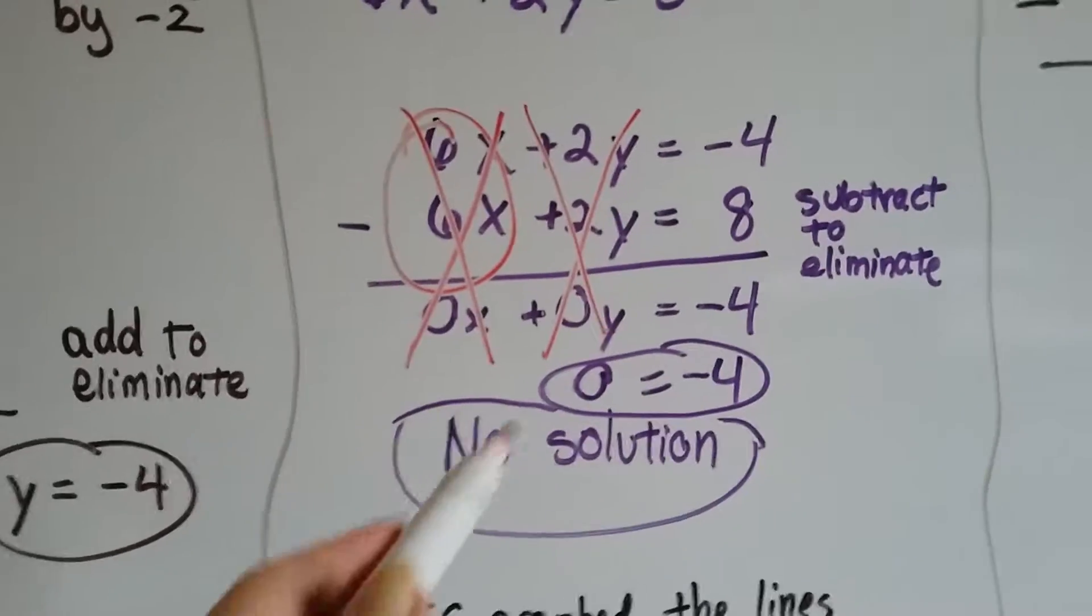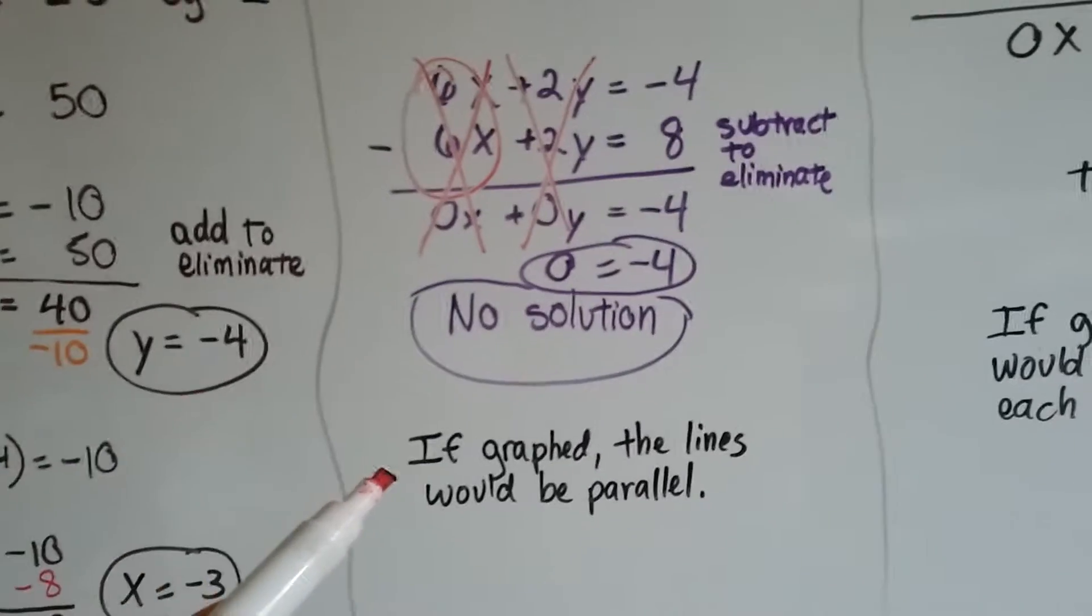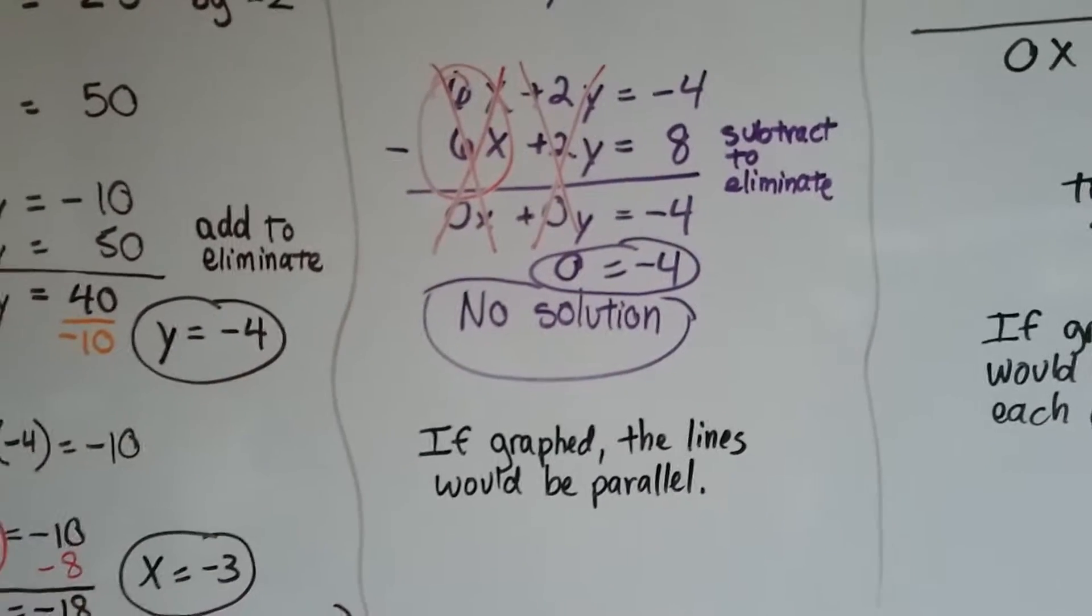There's no solution. 0 doesn't equal -4. If graphed, these lines would be parallel. It's a false statement.